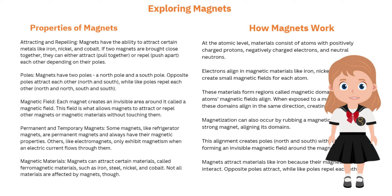Magnetic materials: magnets can attract certain materials called ferromagnetic materials, such as iron, steel, nickel, and cobalt. Not all materials are affected by magnets, though.